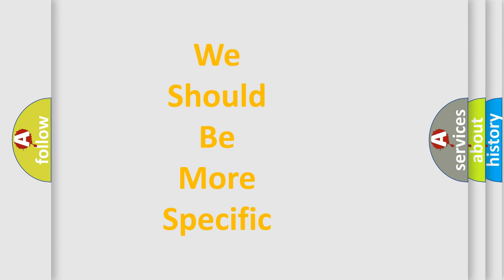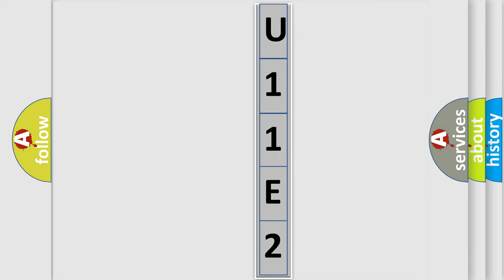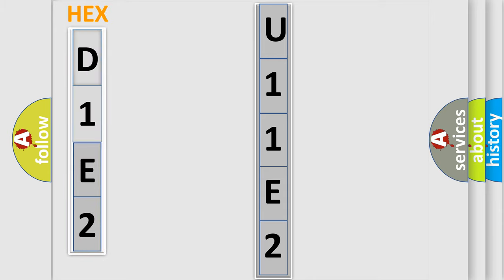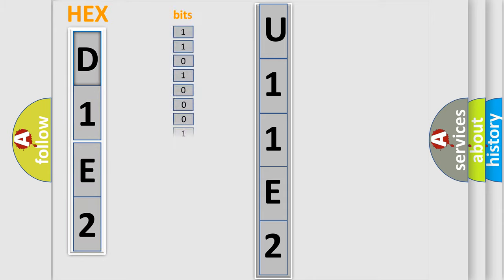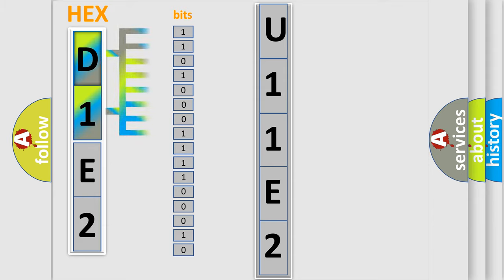The following demonstration will help you look into the world of software for car control units. The error code is split into two bytes consisting of 16 bits. One bit is the basic unit that each computer works with. The bit has two logical states: zero, which is low level, and one, which is high level.